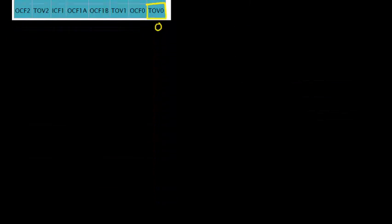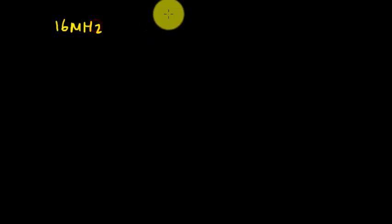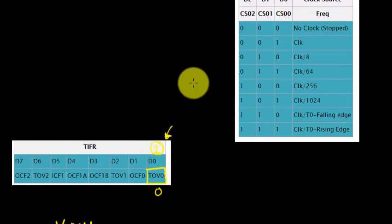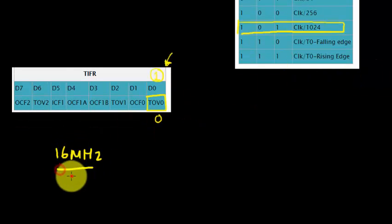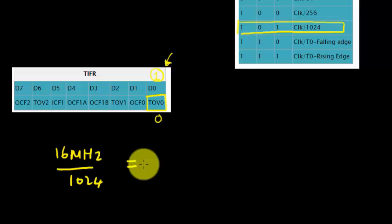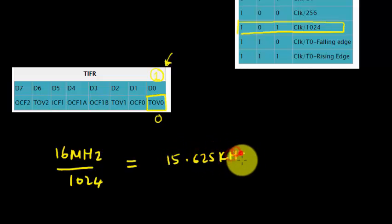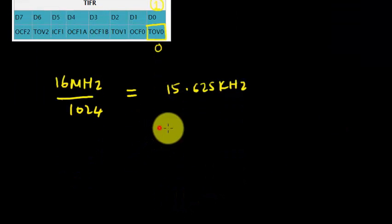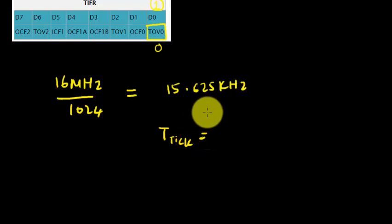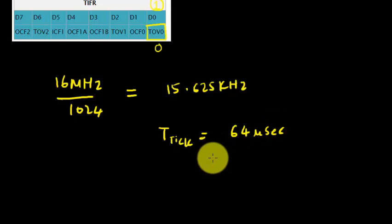Let's see how fast the timer is. It runs on 16 MHz, and the highest prescaler value we can use is 1024. So before the timer takes that frequency, let's divide it by 1024: 16 MHz / 1024 = 15.625 kHz. Each timer tick is therefore the reciprocal of this, which is 64 microseconds. So in every 64 microseconds the timer increments.